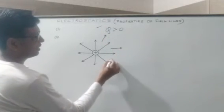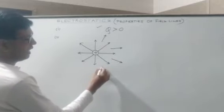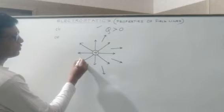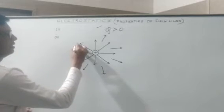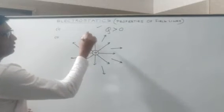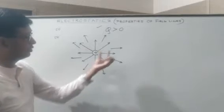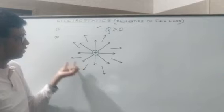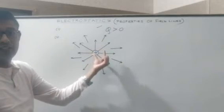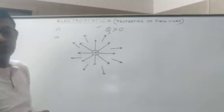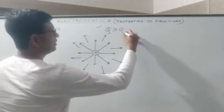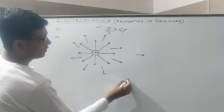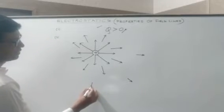We will discuss the inverse square law. As the distance of the observation point from the source charge increases, the strength of the electric field keeps decreasing. That is why the length of the arrows farther away is smaller compared to the arrows closer to the source charge — and still further out, the arrows become smaller and smaller.